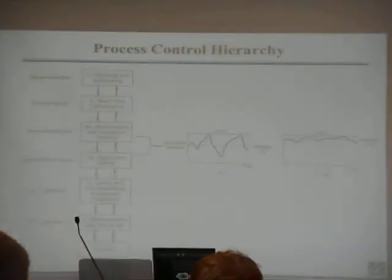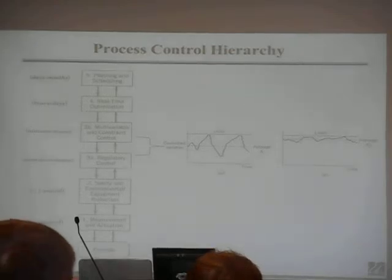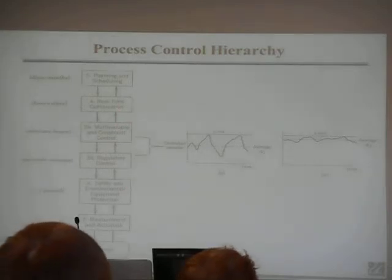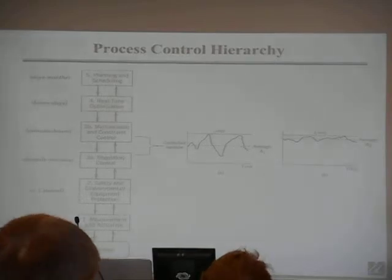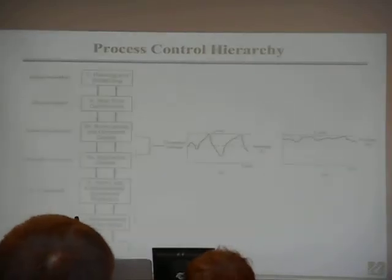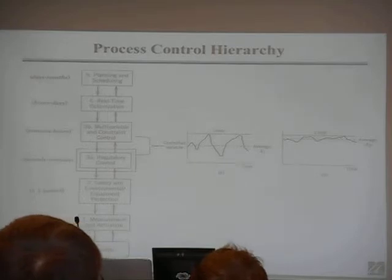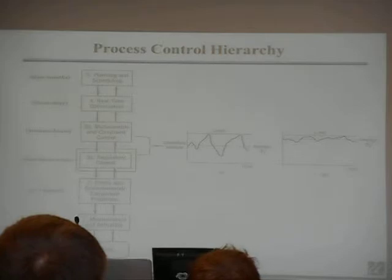For instance, the first thing you should do with that unit is get everything out of that column — that's done at the safety interlock level. If some problem is observed, you handle it at that level, not the regular control level. The main focus of what we're going to talk about is the regulatory control level: controlling level, pressure, temperature, and flows. These are the most common measurements and controllers — that'll be our main focus.